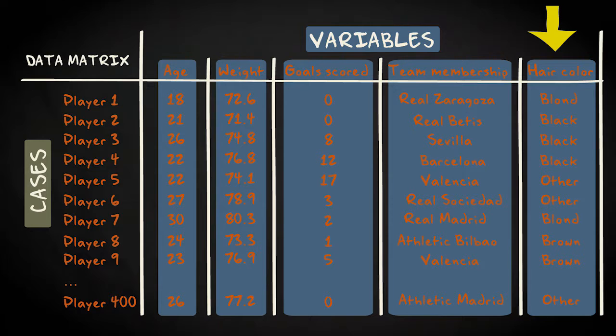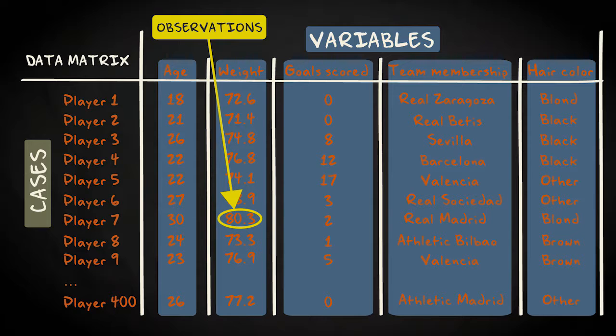The values that are displayed in the cells of this table are usually called observations. 80.3 here means that player 7 weighs 80.3 kilograms. The value 8 here means that player 3 has scored 8 goals.